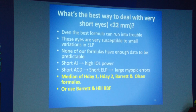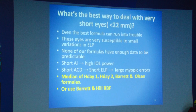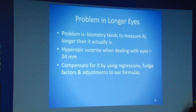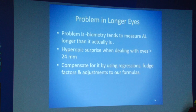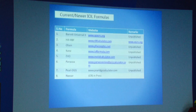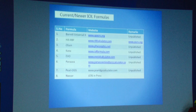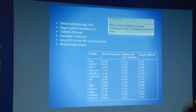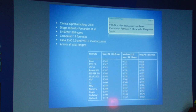What is the best approach for short eyes? Older conventional wisdom said use Hoffer Q, but recent publications are increasingly favoring Barrett Universal 2 and Hill RBF. For longer eyes, we know there is a hyperopic surprise in eyes more than 24 mm. The three formulas that work well again are Barrett Universal 2 and Hill RBF — and all these new generation formulas are free and available online. A meta-analysis published in 2022 showed that for short axial length under 22 mm, 22–26 mm, and over 26 mm, the best-performing formulas are Kane, EVO 2.0, VRF, Barrett Universal 2, and Hill RBF — with older generation formulas like SRKT not appearing in the top five.